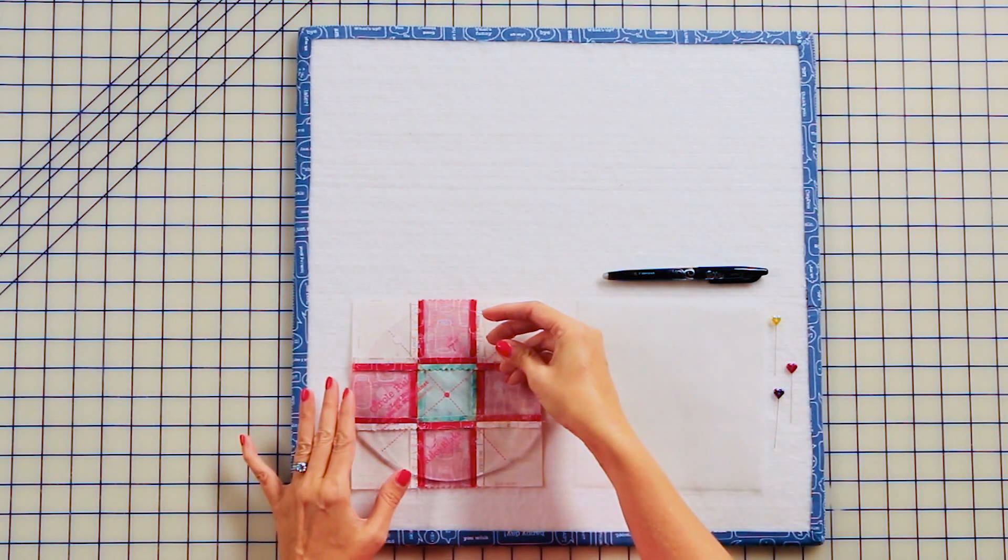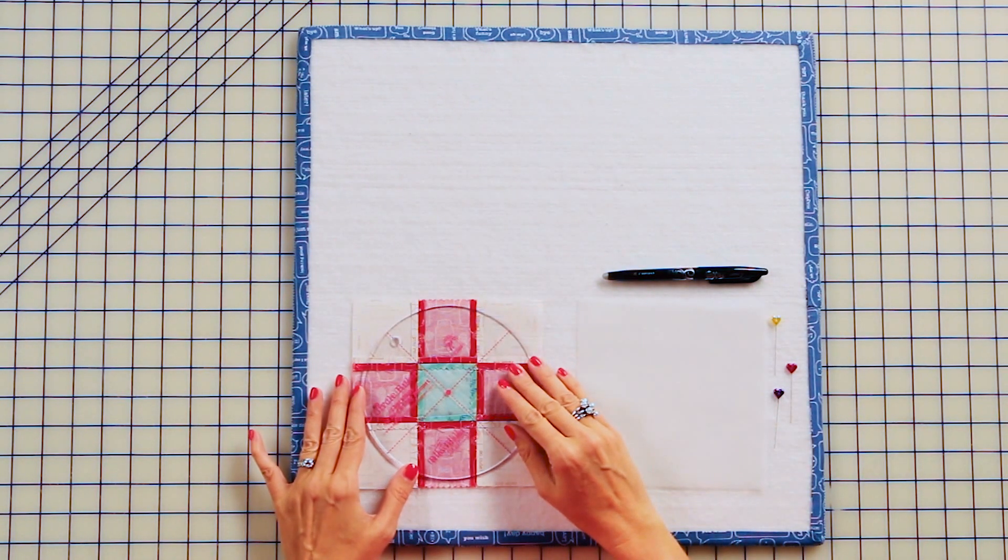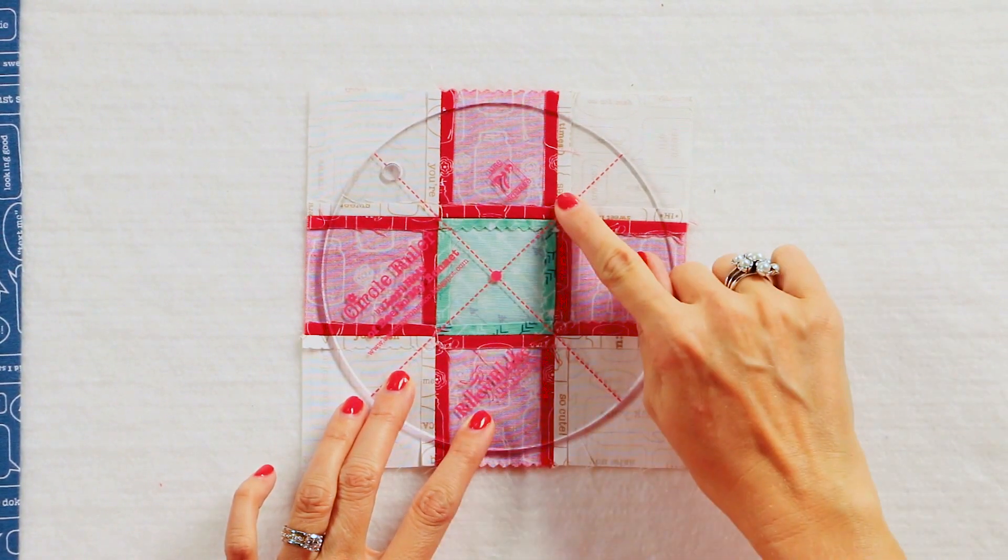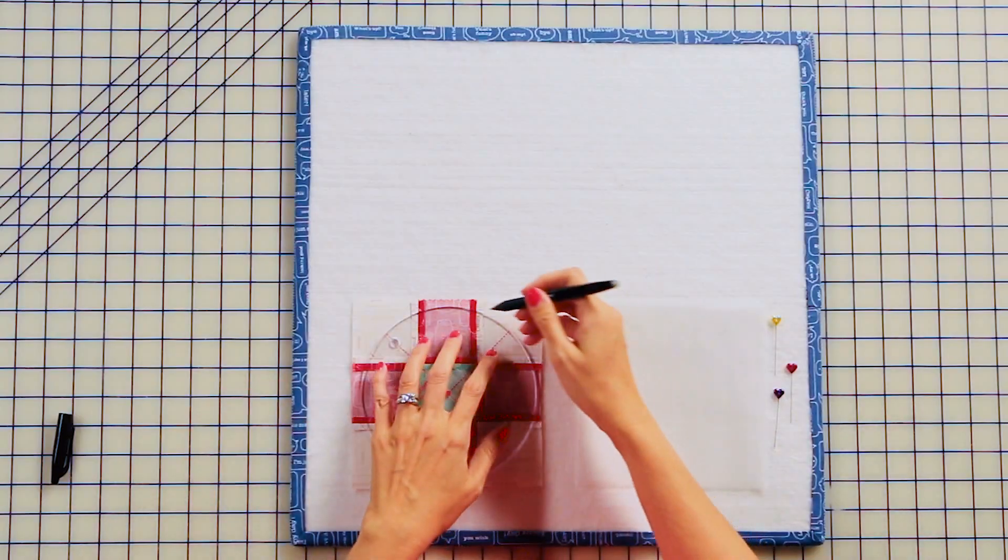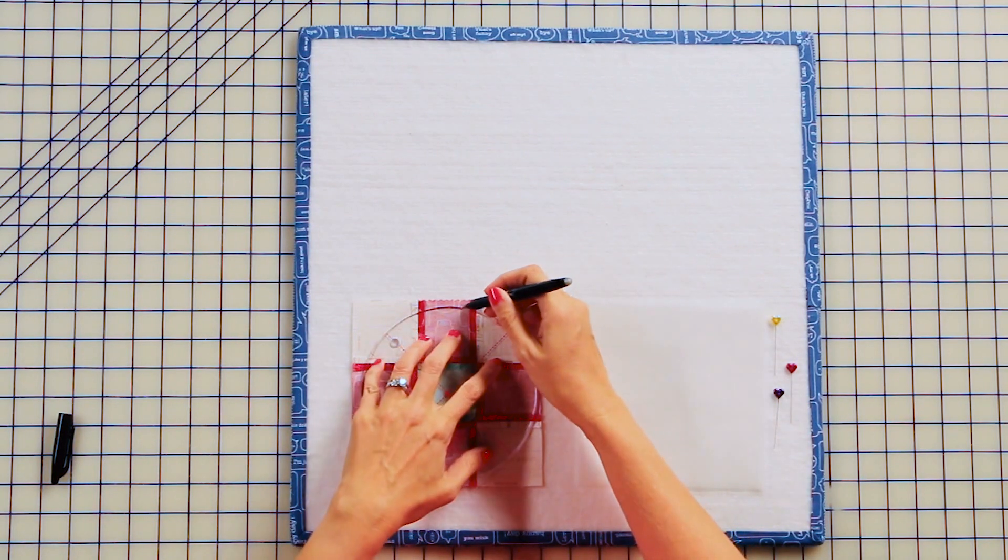Place the 6-inch circle ruler on the back and make sure the lines of the ruler intersect your seams. Draw a line around the circle ruler with your friction pin.